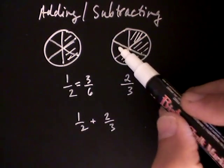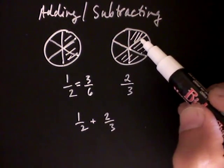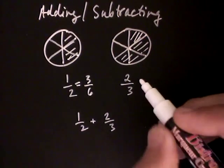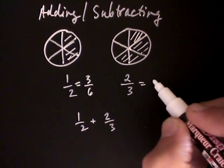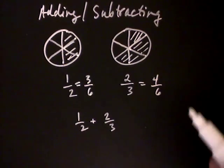One, two, three, four, five, six, and my friend ate one, two, three, four of those. So, eating two thirds of the pizza is the same thing as eating four sixths.